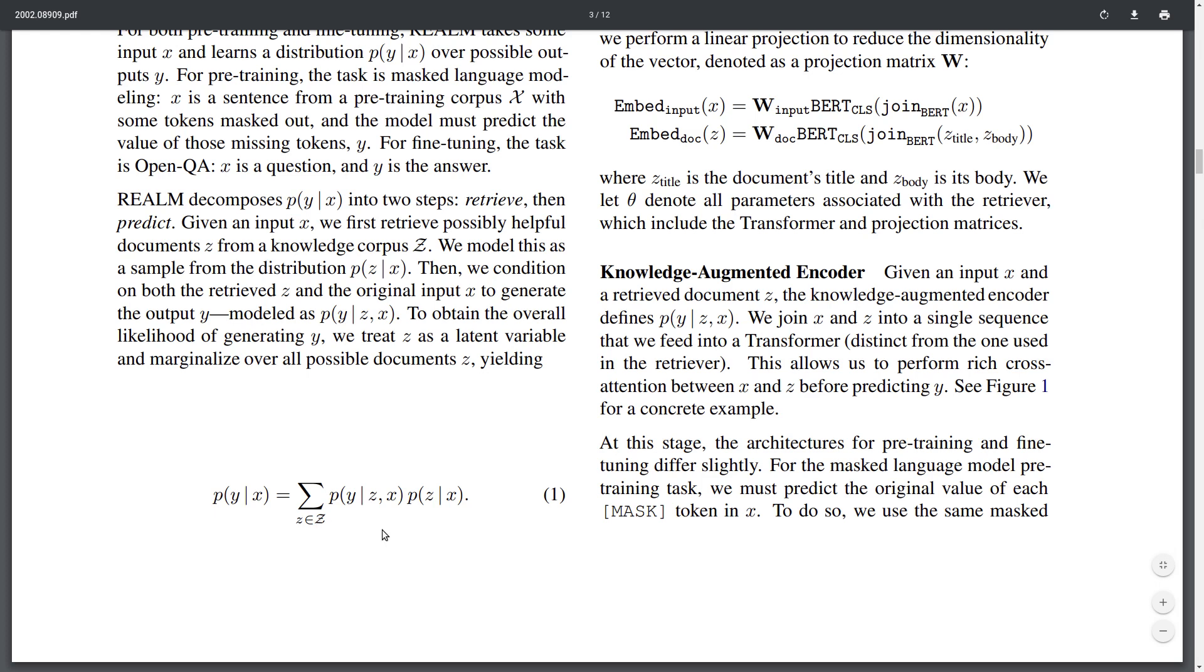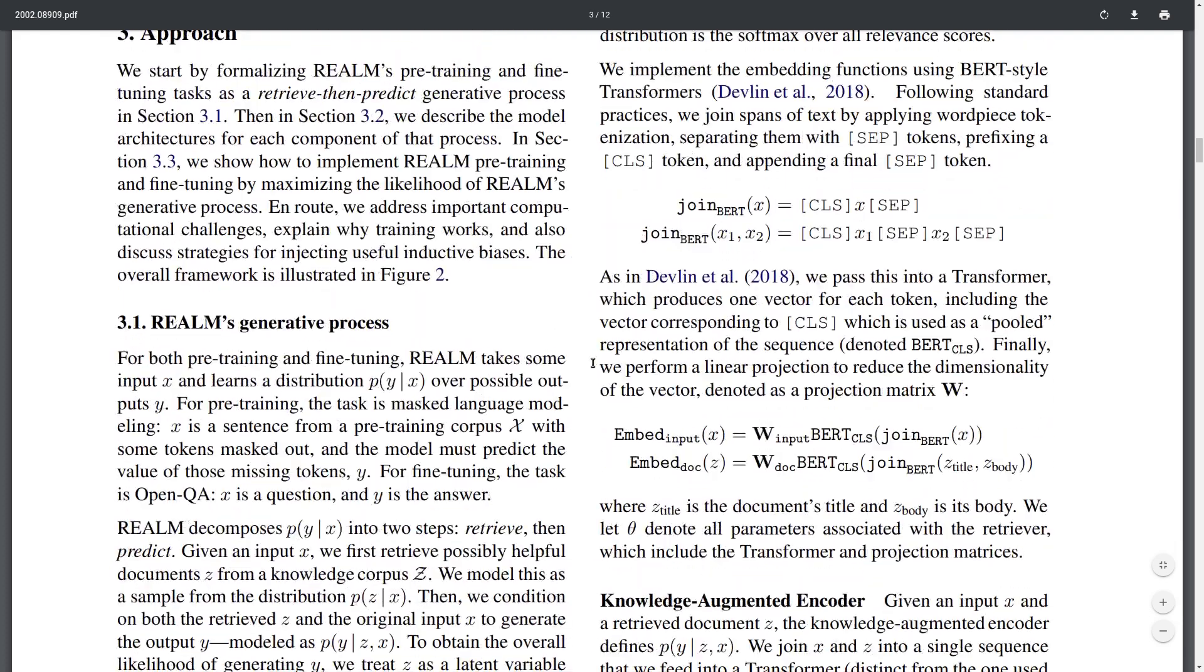What they do is they have two models. One is modeling the probability of the output y given the document that's selected from z and the input x, times the probability of a document z given the input x. So this is the retrieval model, this is the standard BERT-style language model augmented by this document that is extracted from this retrieval model, and then they marginalize over a couple of those documents extracted from this database z. That's how this works, basically, and the two models are trained jointly together.